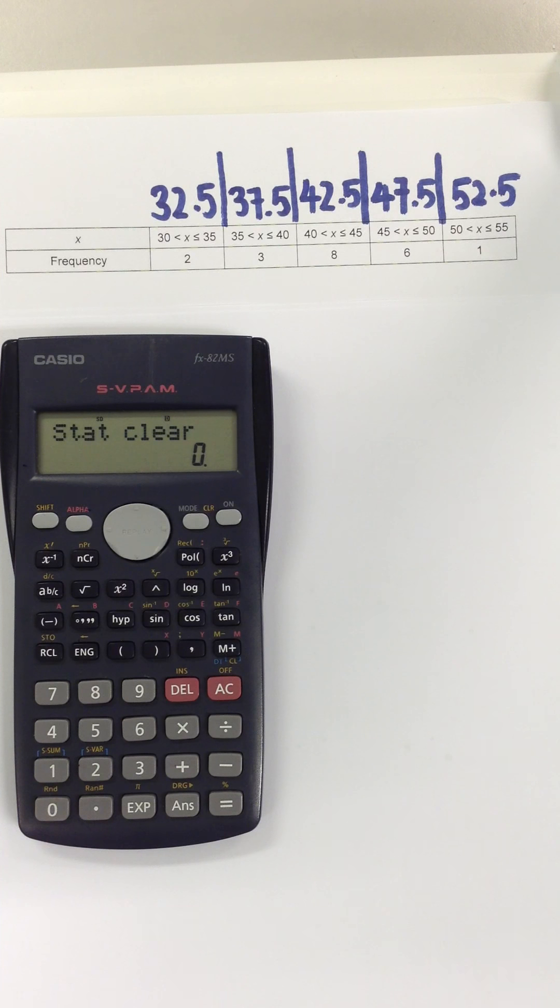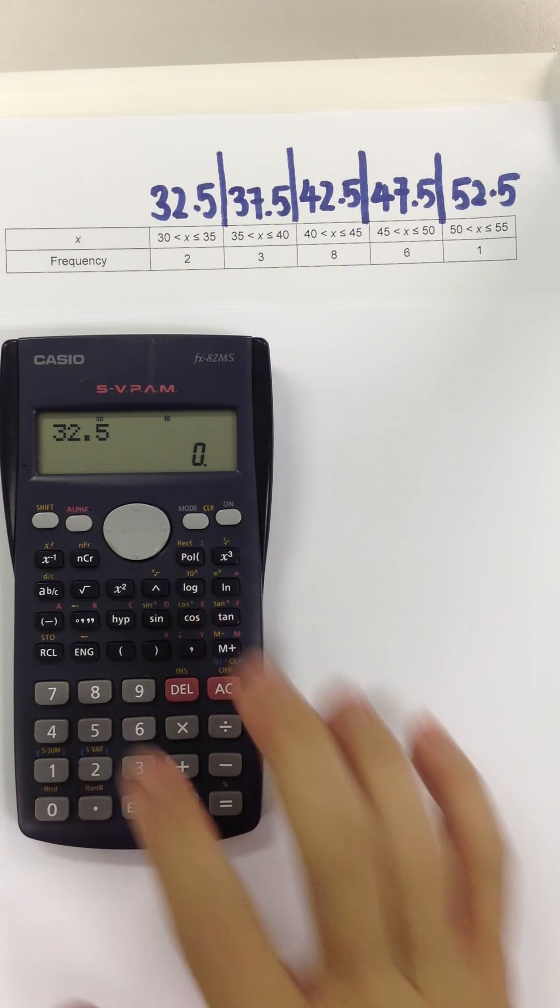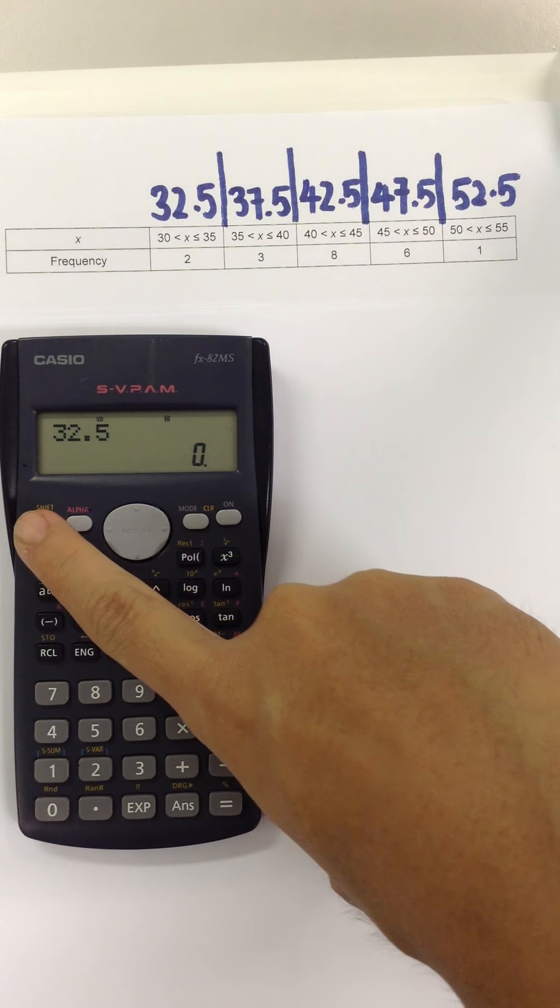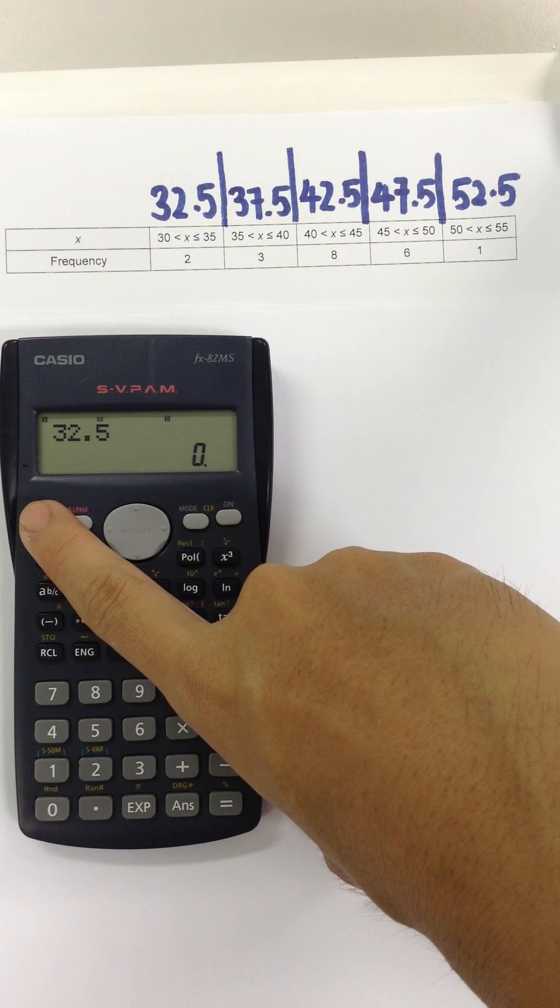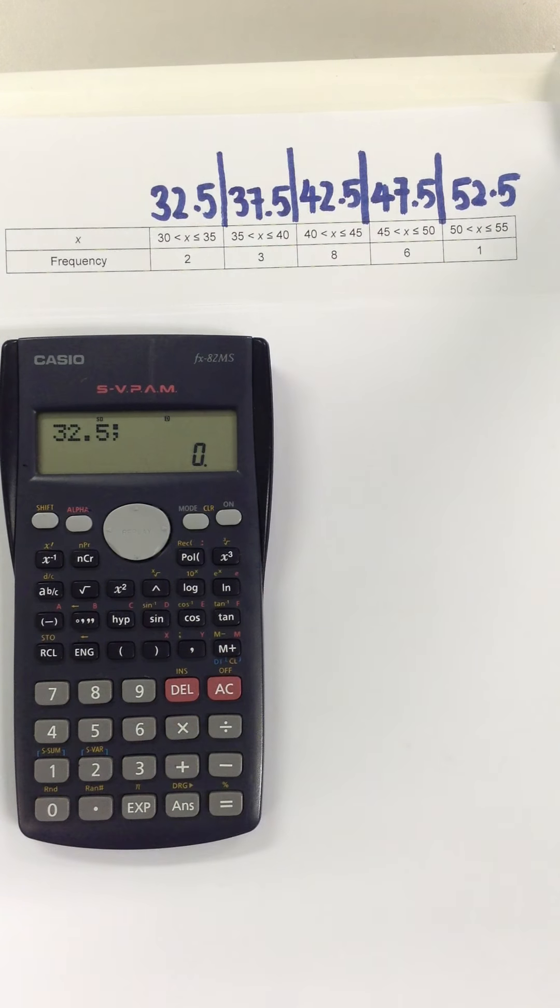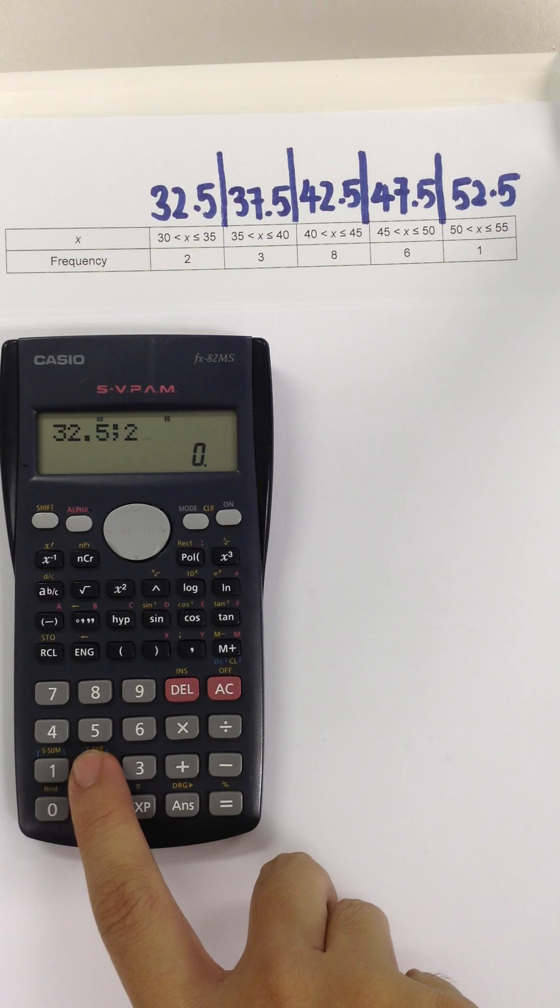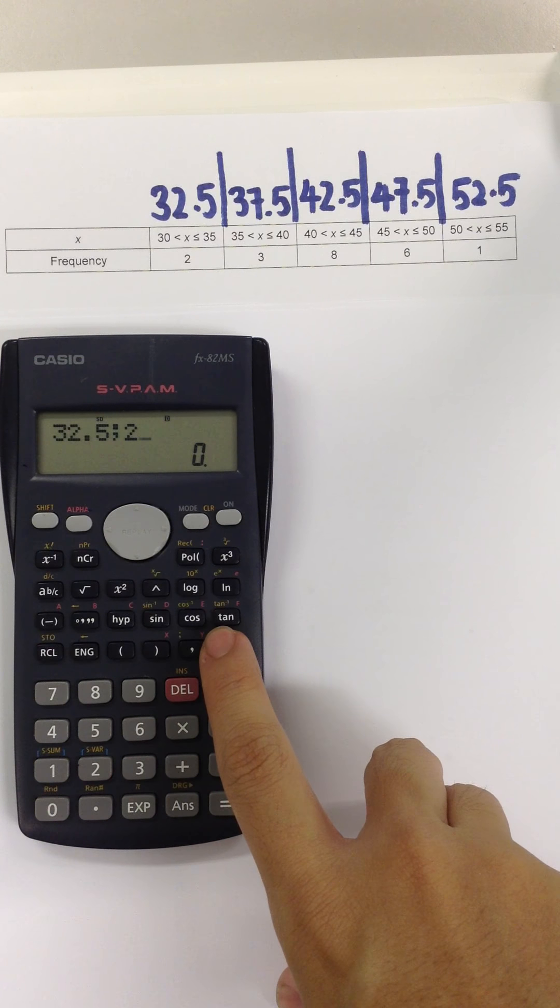Step 3: Key in the data. 32.5, press shift and press the comma button. You should see a semicolon followed by the frequency. Press 2 and press plus.